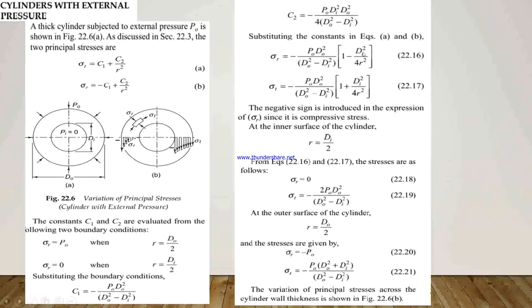In equations 22.16 and 22.17, we get the values of sigma_R and sigma_T. In both equations, there is a negative sign introduced in the expression of sigma_R, since it indicates compressive stresses at the inner surface. At the inner surface where R equals inner diameter divided by 2, substituting into equations 22.16 and 22.17, we get sigma_R equals zero and sigma_T equals minus 2 times po times do² divided by (do² - di²).